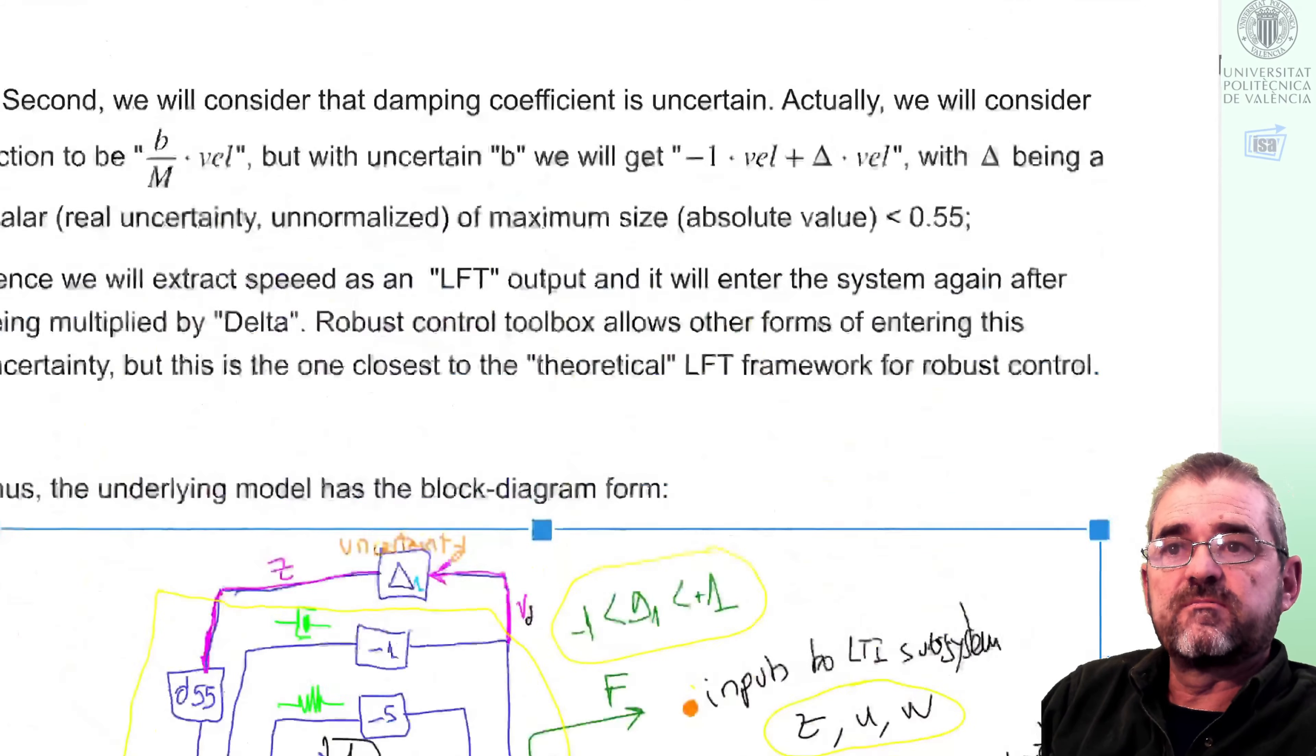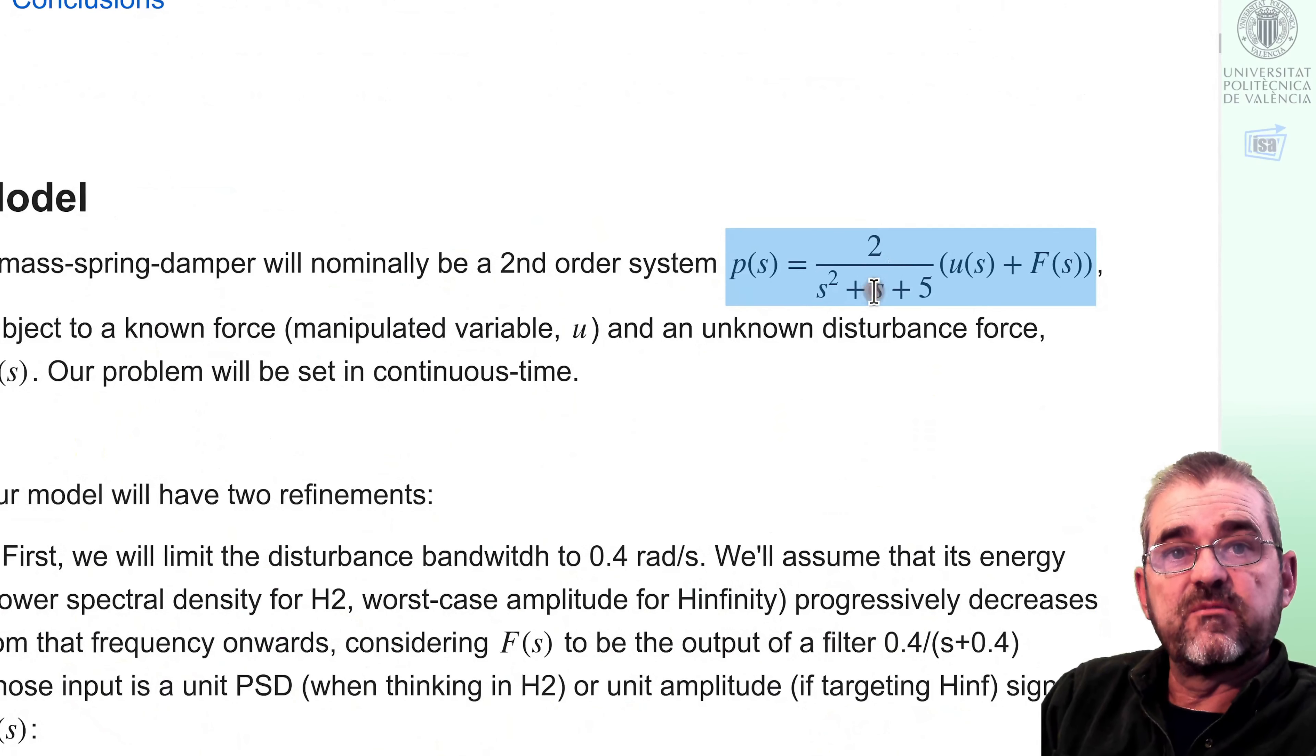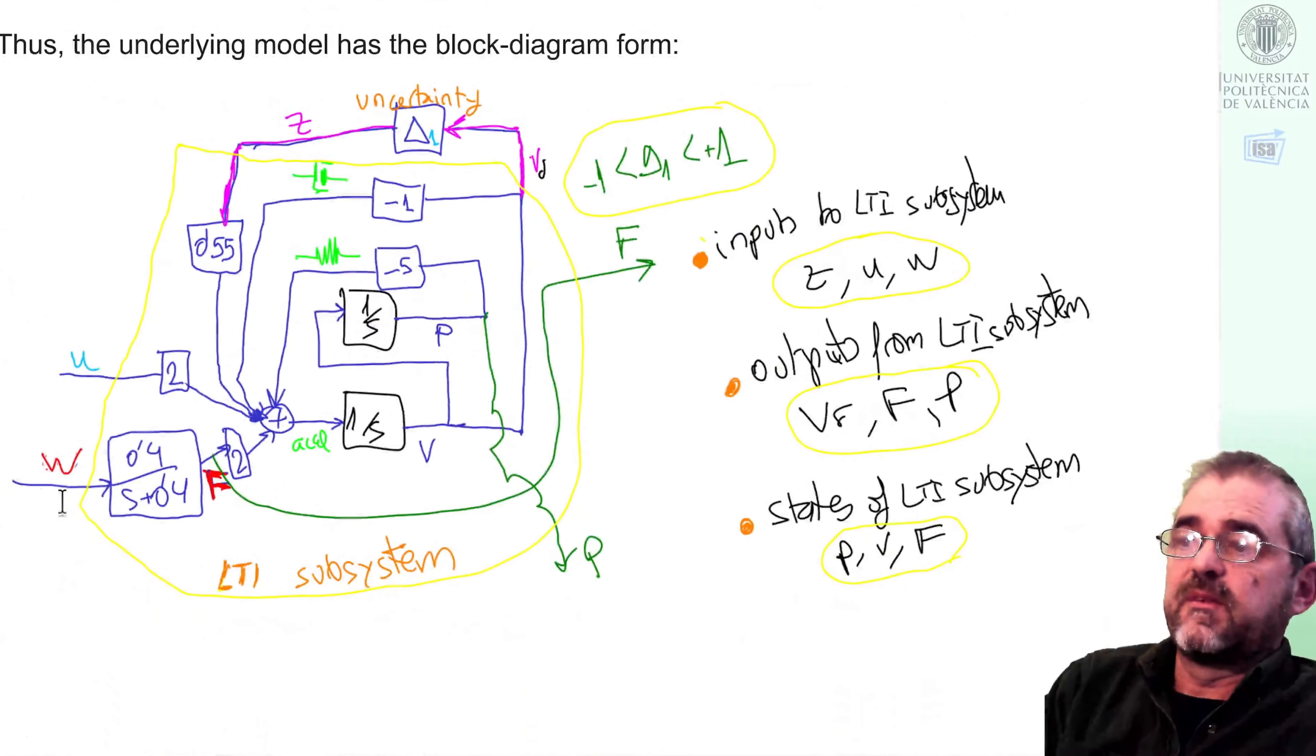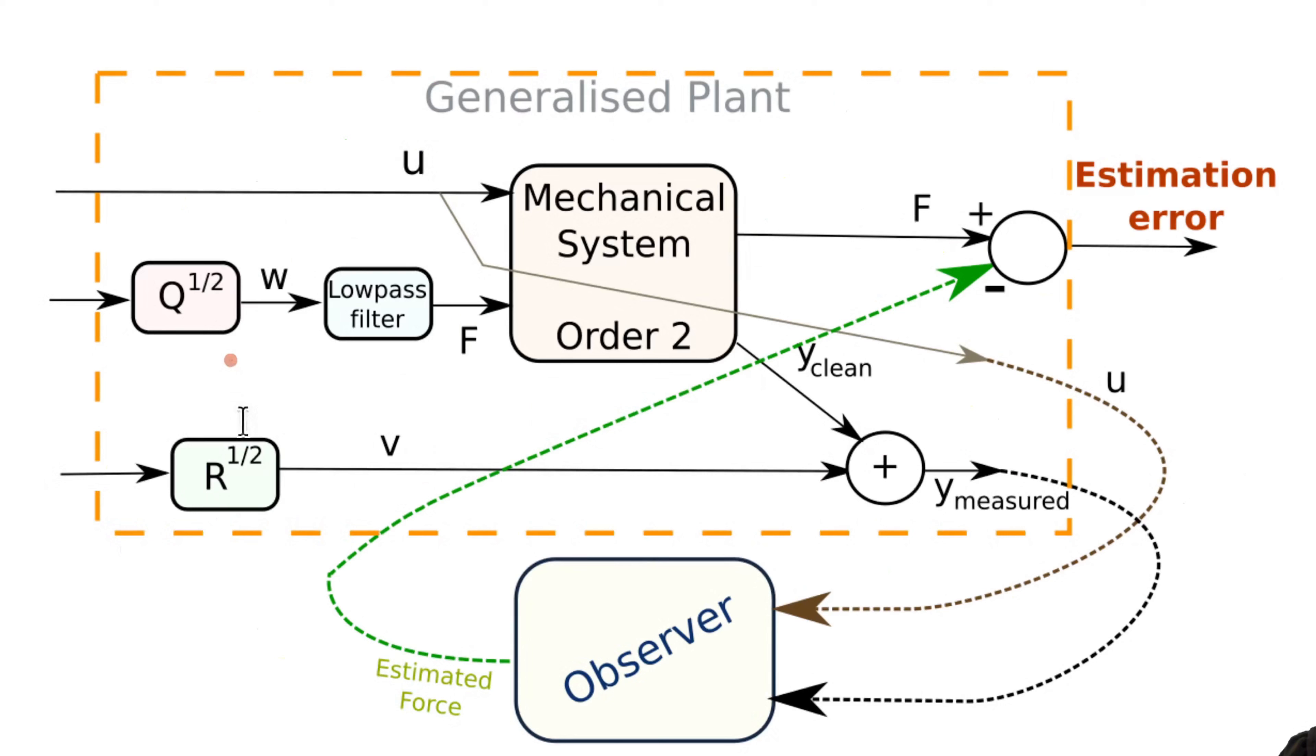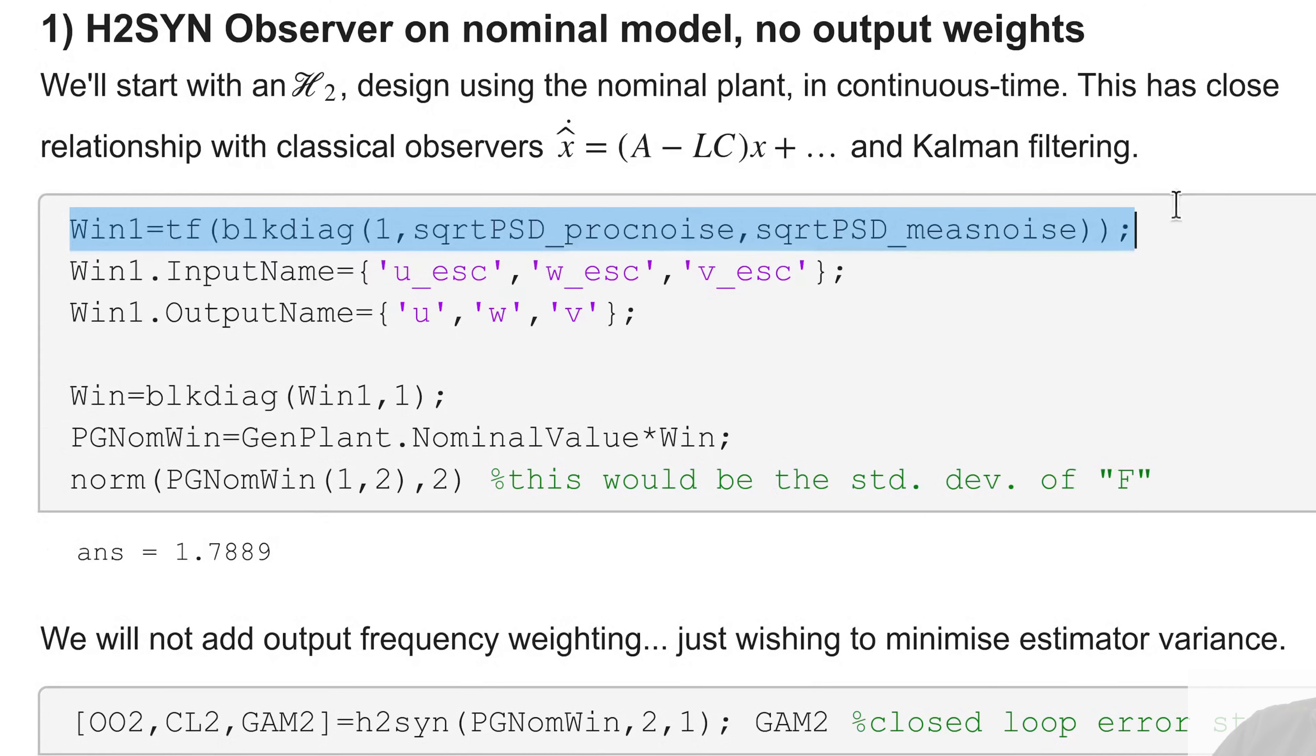If we review previous videos, we had this uncertain system whose transfer function was this one nominally but with the coefficient multiplying s being an interval. We had some process noise that generated a band-limited disturbance capital F and we crafted a generalized plant in which we added measurement noise multiplied by some constant weights and fed the known input u and the measured position to an observer to be designed with H2, H infinity, or mu synthesis so that it would output an estimated force and we had some frequency-dependent goals on the estimation error, the difference between the actual force and the estimated one.